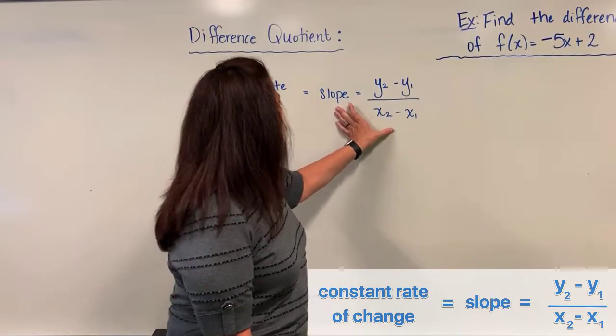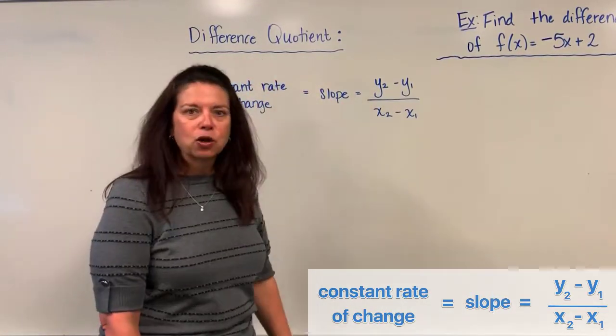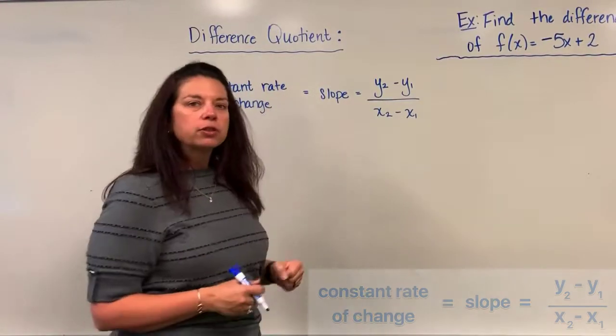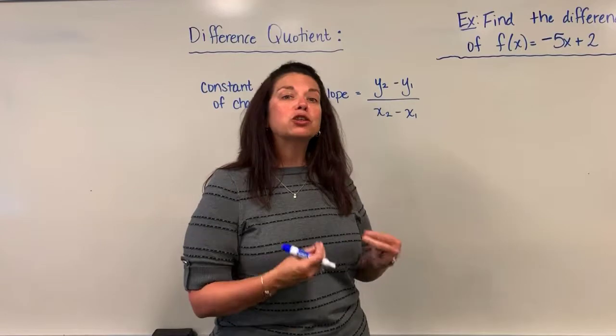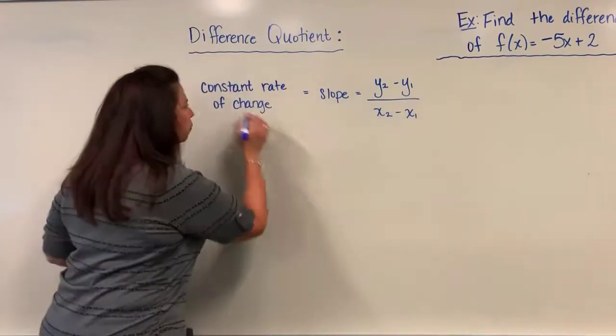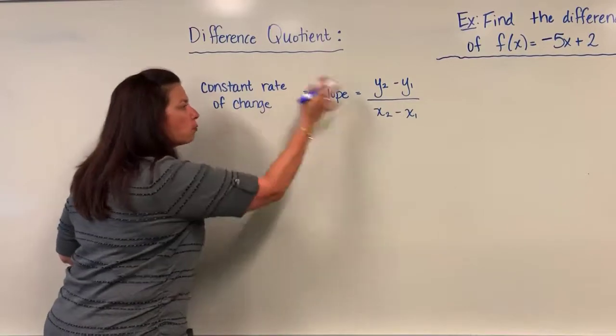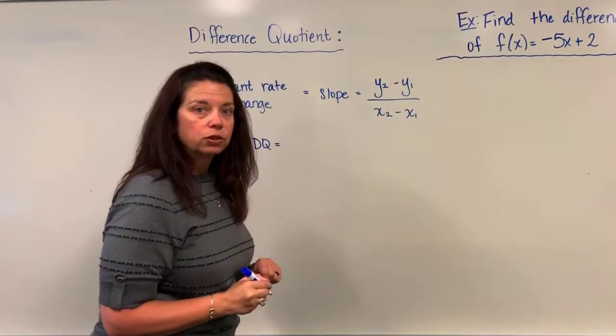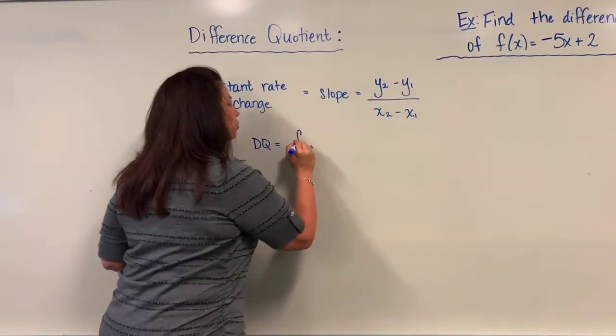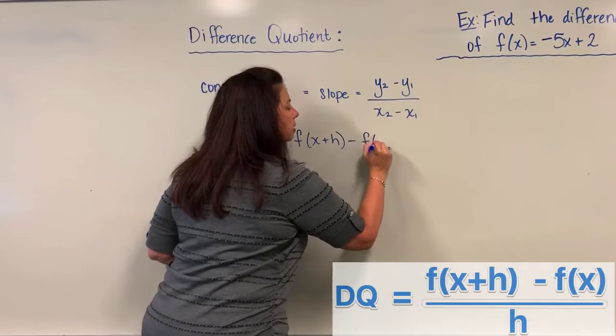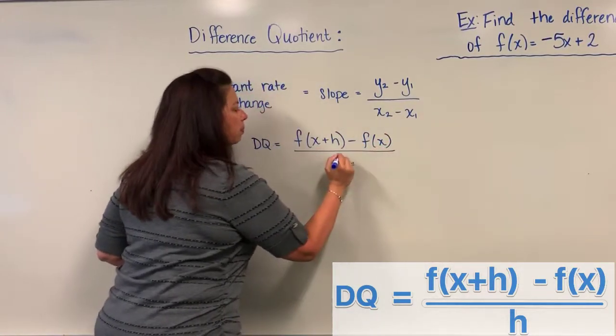So relative to that, we have a topic in calculus called the difference quotient and it's all related, but in the difference quotient we prefer to write the slope in terms of function notation like f of x. So I'm going to rewrite this slope formula, if you will, as the DQ to stand for the difference quotient and notate it using function notation of f of x plus h minus f of x all divided by h.